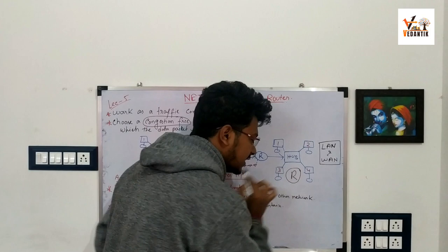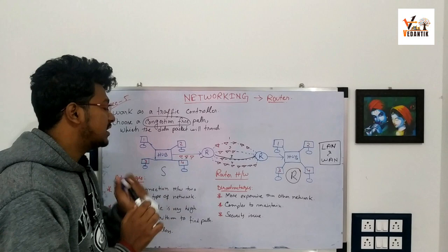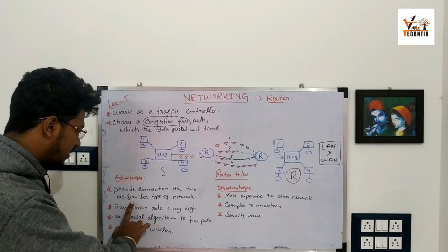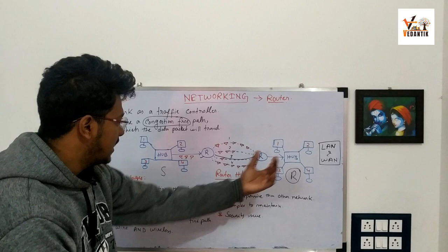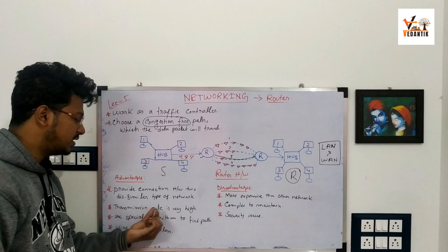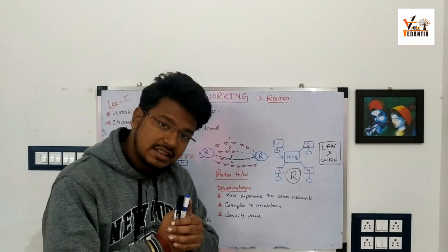So the router finds the connection-free, traffic-free path. These are the advantages and disadvantages. Advantages: it provides congestion-free hardware to dissimilar types of network connections. The transmission rate is high because the path is traffic-free.